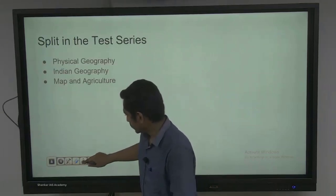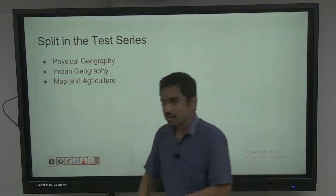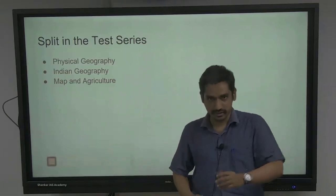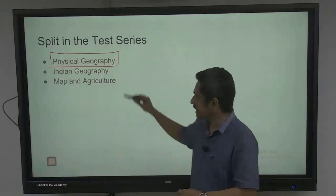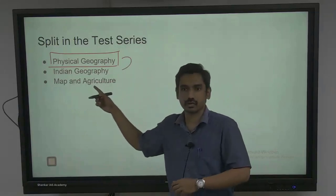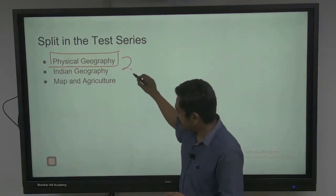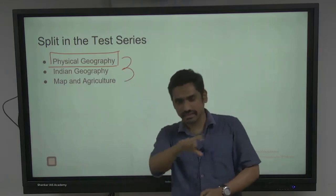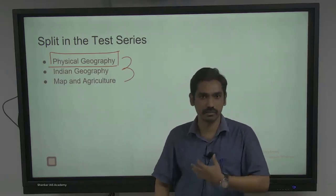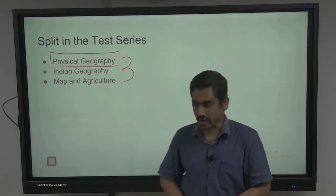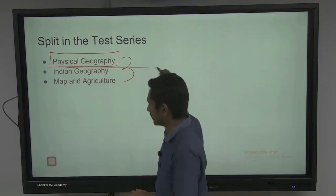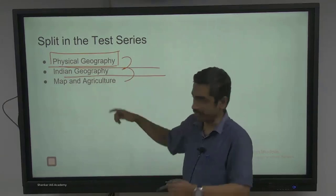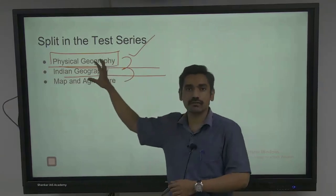If you look at geography's syllabus split-up, it has been split into three tests — it is not just one test. Today's orientation is only the first part: physical geography. Apart from physical geography, there is a separate test for Indian geography. And after Indian geography, there is one more segment — the miscellaneous topics segment — which includes India map questions and agriculture questions.